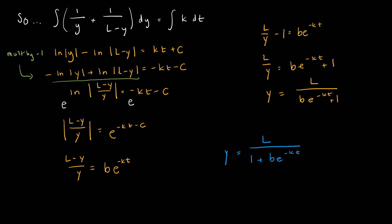Using the laws of logarithms, subtraction becomes a denominator, so I've rewritten it as the natural log of (L minus Y)/Y, with the right side unchanged. Now I exponentiate both sides: on the left, E and the natural log cancel, leaving the absolute value of (L minus Y)/Y. On the right, I have E^(−KT − C), which equals E^(−KT) · E^(−C). I take E^(−C) and call it B — your textbook uses B instead of C.